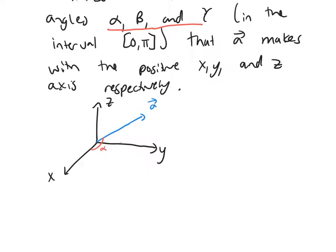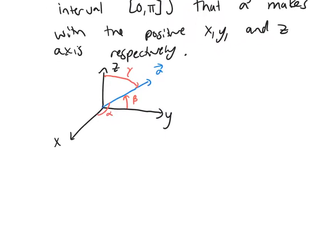The angle between the positive y-axis and the vector A would be beta. And finally, the angle between the positive z-axis and the vector A, that would be the angle gamma. So there's our three angles.